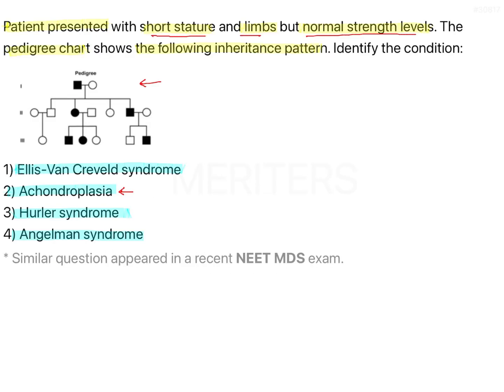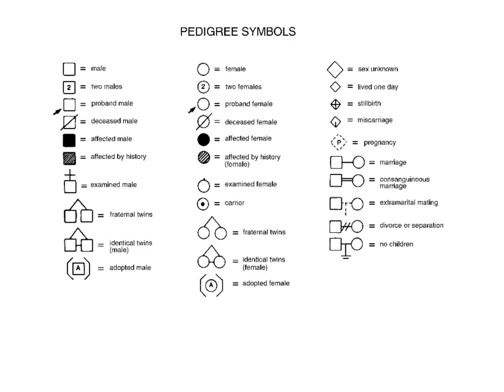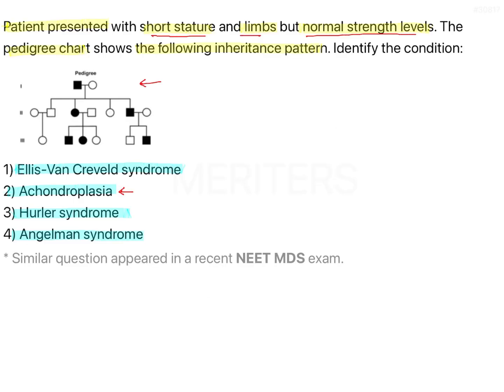These patients are dwarf but of normal intelligence, and they are endowed with unusual strength and agility — something specific to achondroplasia. Now, how to interpret a pedigree chart: a pedigree chart represents the inheritance pattern. The key things to know are how to demarcate gender, how offspring are affected, and twin representation.